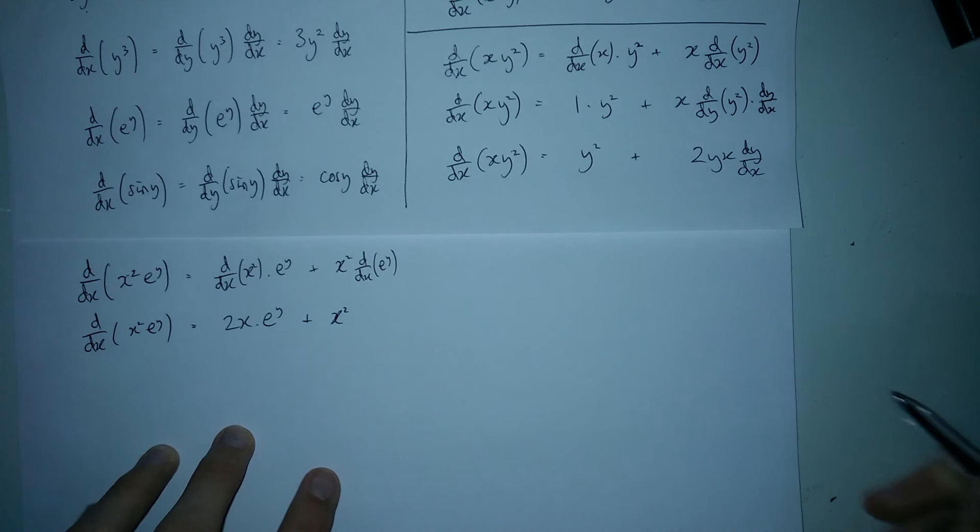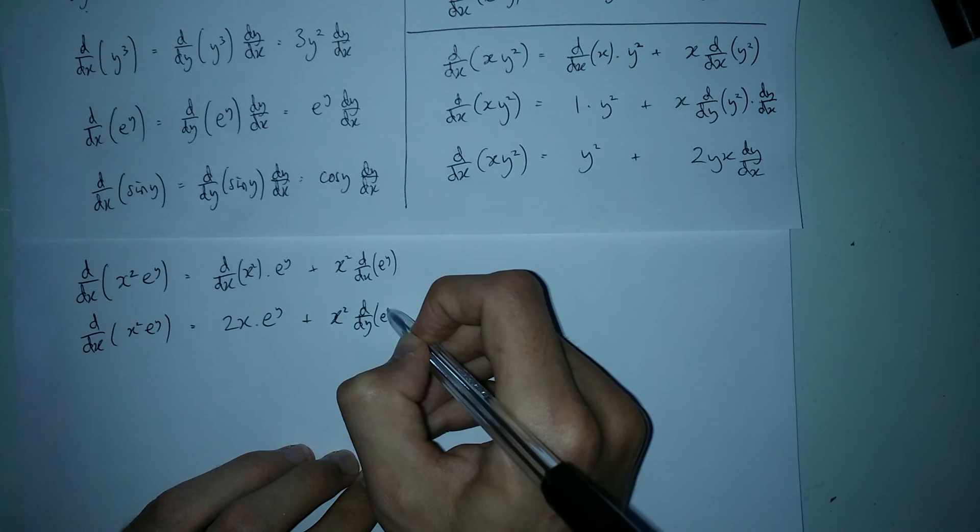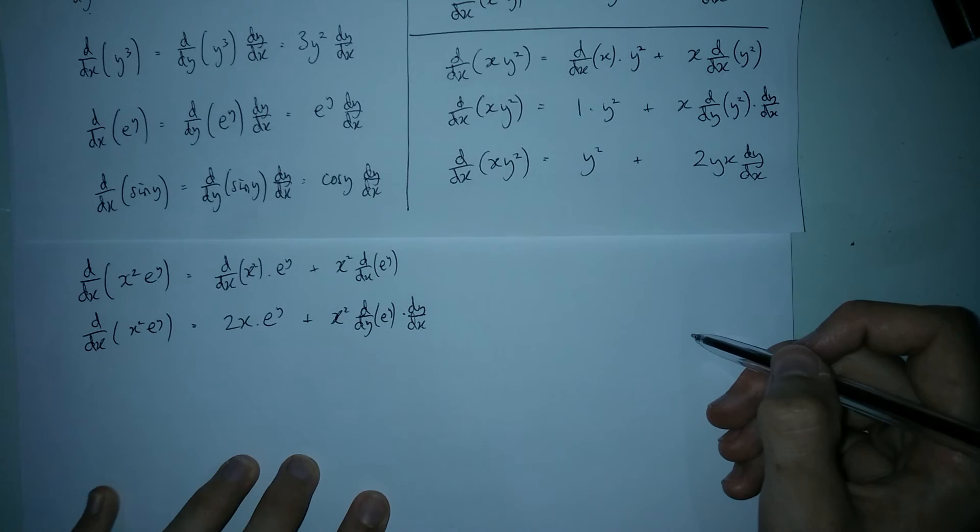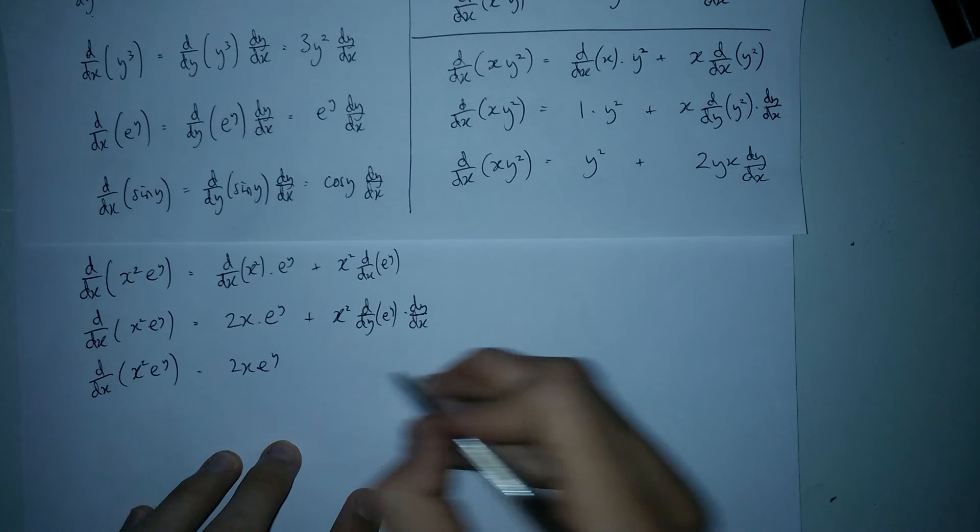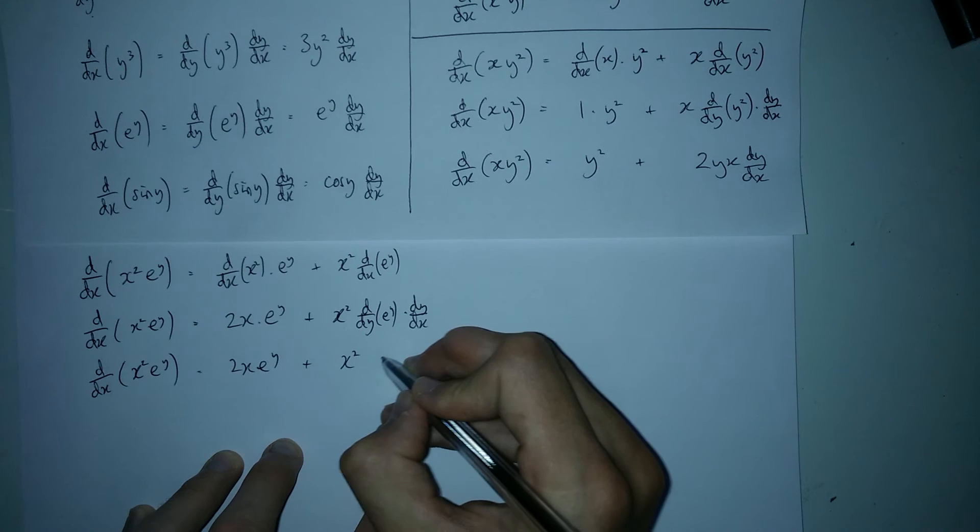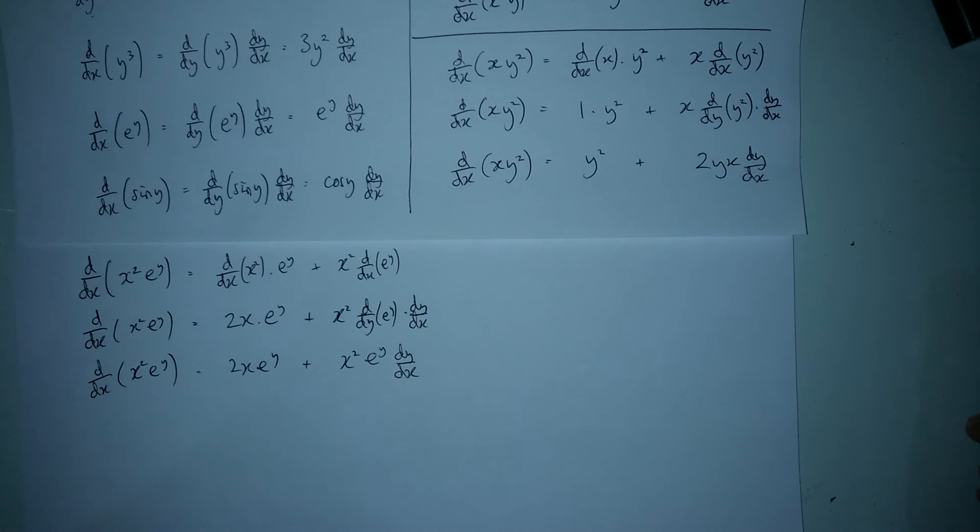Now, over here, we don't really like differentiating e to the y with respect to x. So we change it to be with respect to y. We stick in the dy/dx to make sure things still equal. And then we copy everything. And just here, we differentiate e to the y with respect to y. So the differential of e to the y is e to the y and the dy/dx bit just sticks on the end there.